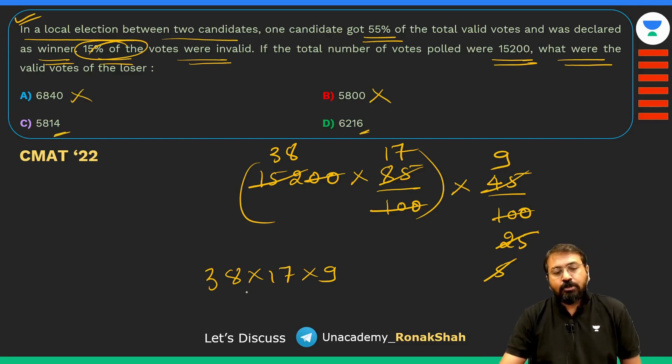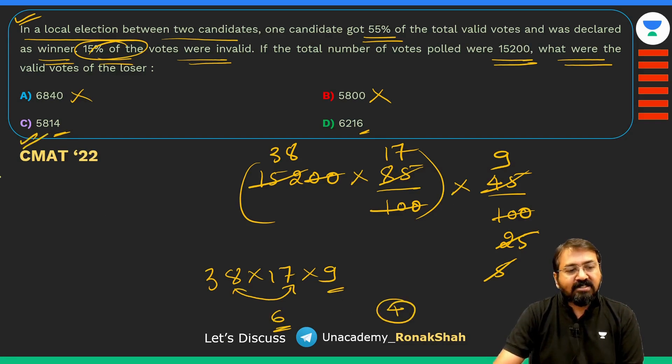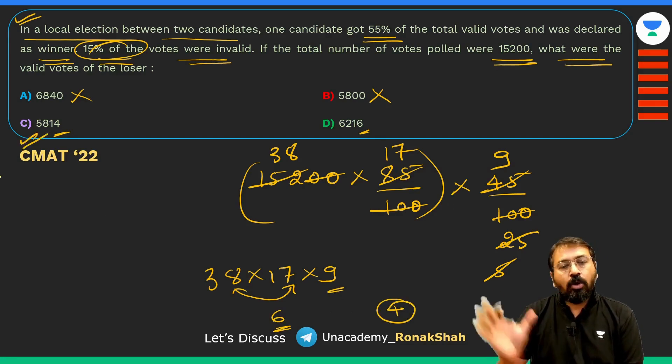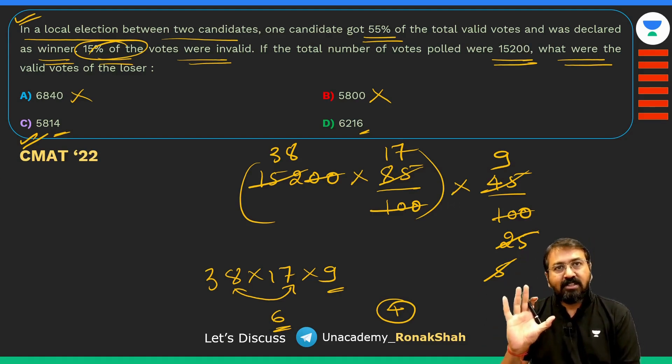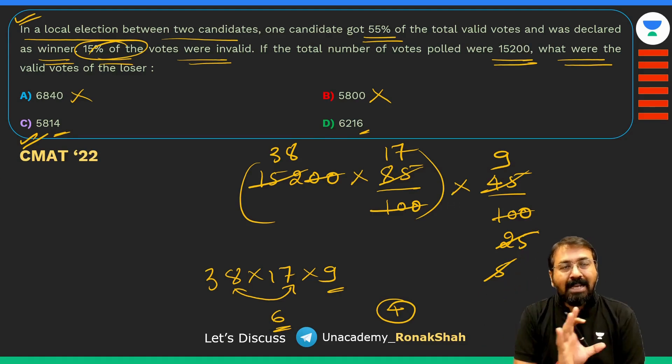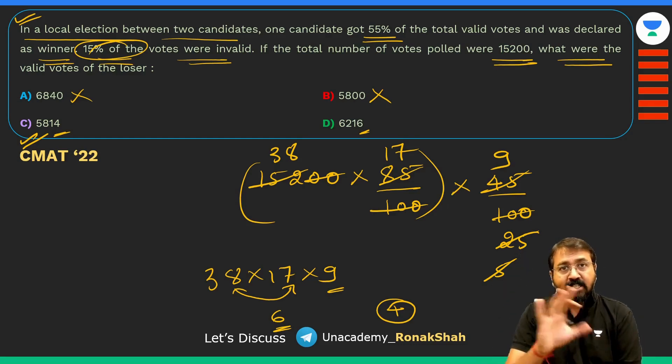Once again I really don't need to solve this question because I know my answer will not end with 0, so last digit will be either 4 or 6. Let's see, 8 times 7 is 56, last digit is 6. 6 times 9 is 54, so my final last digit should be 4. I can safely tick mark option C and go ahead. It should not take more than 60 seconds to solve this question.